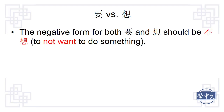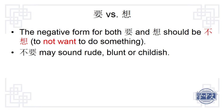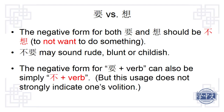The negative form for both 要 and 想 should be 不想. Note that 不想 may sound rude, blunt, or childish. Also, the negative form for 要 plus verb can simply be 不 plus verb, but this usage does not carry a strong indication of one's intention or desire.